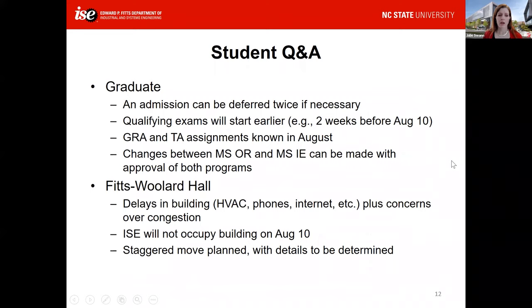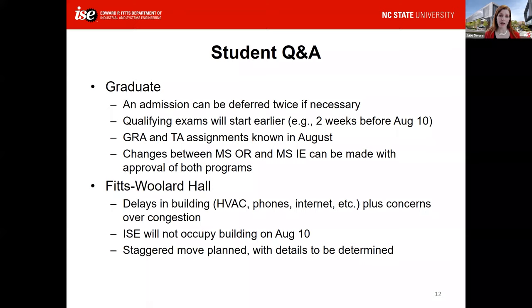Some questions came specifically from graduate students. One is about deferral: if you choose to defer your admission starting August 2020, you are allowed to defer to January 2021. By working with our graduate program, you have the option of deferring again if necessary. The preference is to defer one semester at a time rather than automatically deferring for an entire year. However, the graduate school normally approves up to one year of deferment without any particular objection. If it goes beyond one year, that may require special circumstances — and of course COVID-19 could well be one.